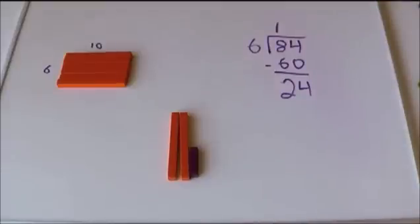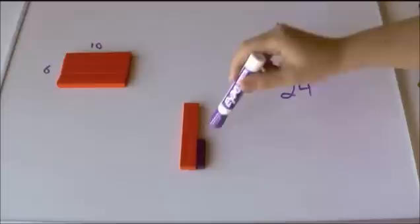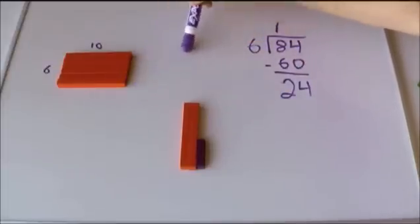Okay, so I have 24 left and I still would like to make this into a rectangle with 6 on one side and something on the other.